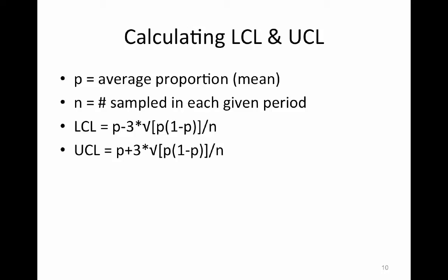So calculating the control limits, the lower control limits and upper control limits, here's the calculation. So you have this mean, and then you subtract 3 times the square root of the mean times 1 minus the mean. Not something you'd typically want to do when you have software, but that's how the formula works.